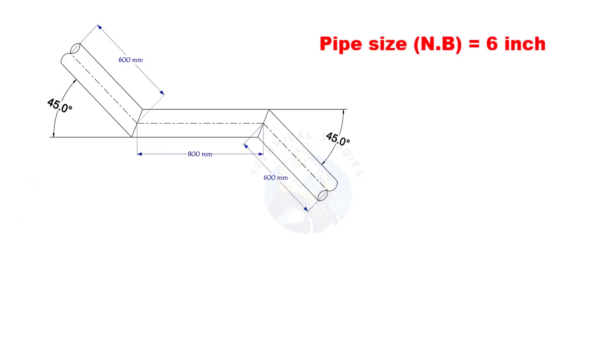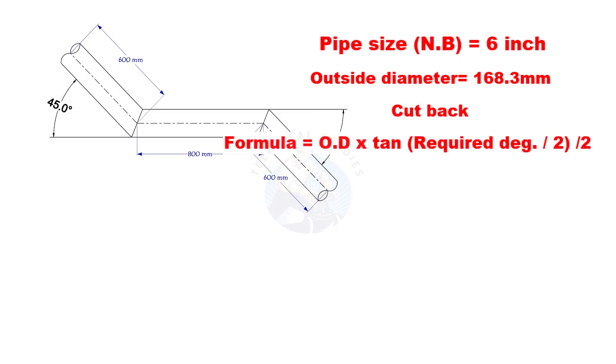The outside diameter of a 6 inch pipe is 168.3 millimeters. Cutback is O D multiplied by tan half degree divided by 2. Here, the required degree is 45. Half of 45 is 22.5.